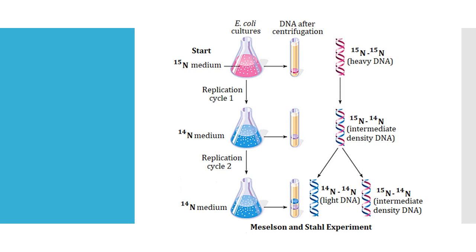First, these scientists grew Escherichia coli in a culture medium containing the N15 heavy nitrogen isotope. DNA consists of nitrogenous bases — adenine, guanine, thymine — so nitrogen is utilized in the synthesis of these bases. They grew this bacteria for many generations so that all the DNA of the bacteria could become incorporated with the heavy isotope of nitrogen. After many generations, the whole DNA of this Escherichia coli became incorporated with N15, and this DNA is called heavy DNA.